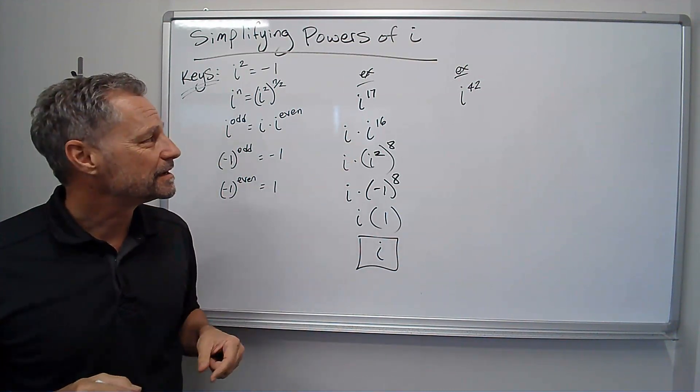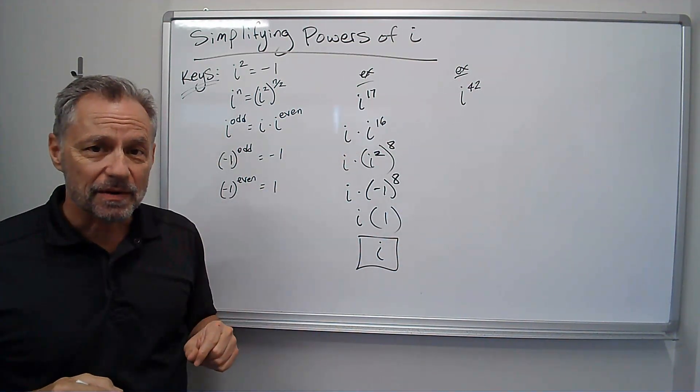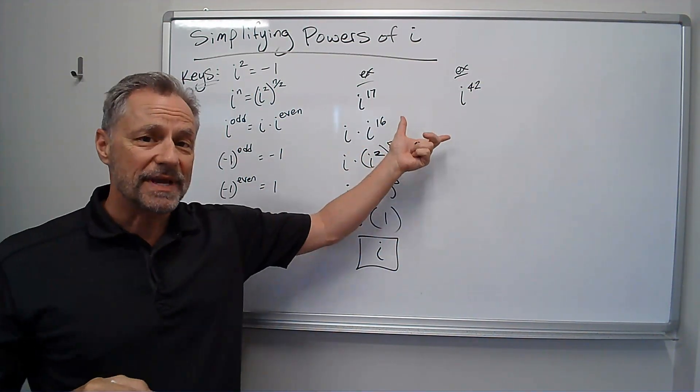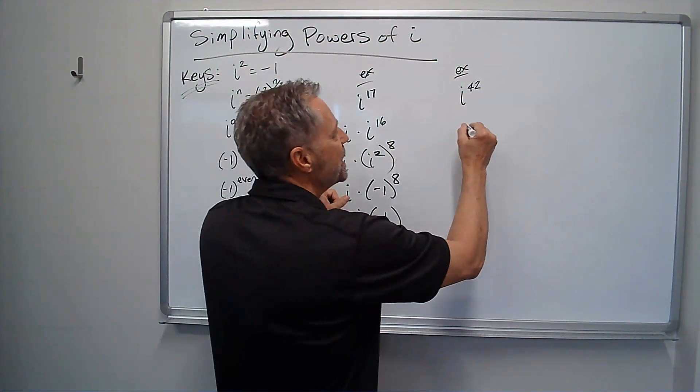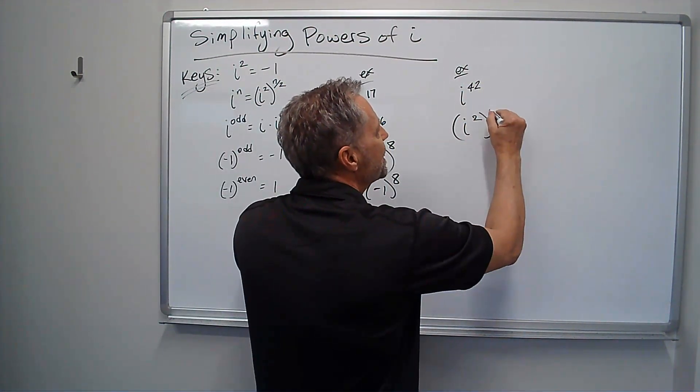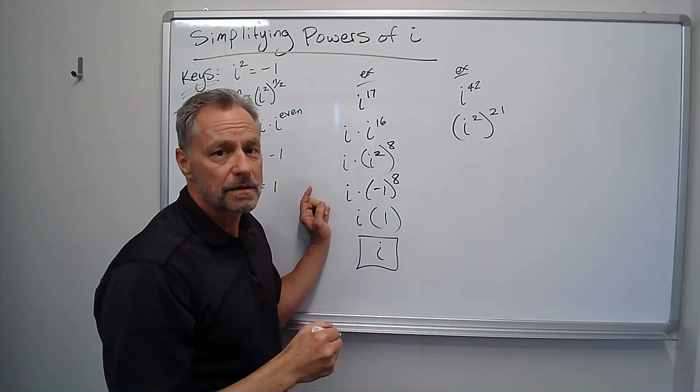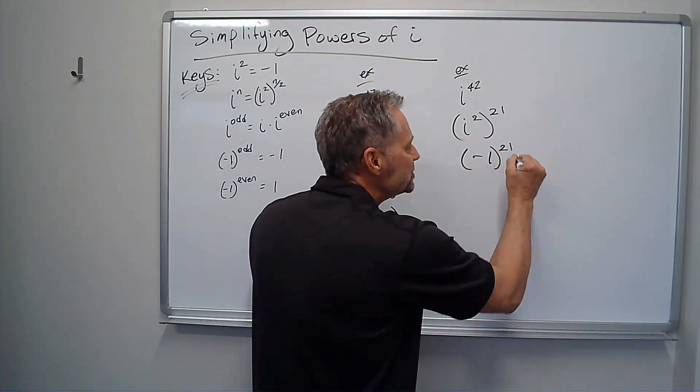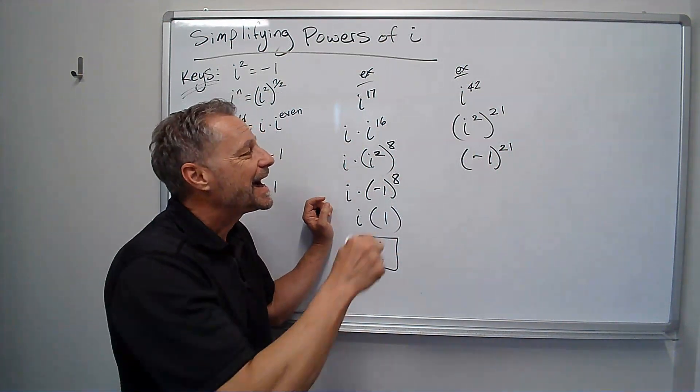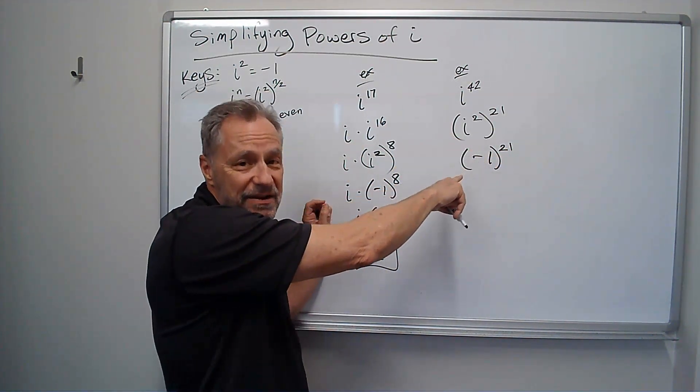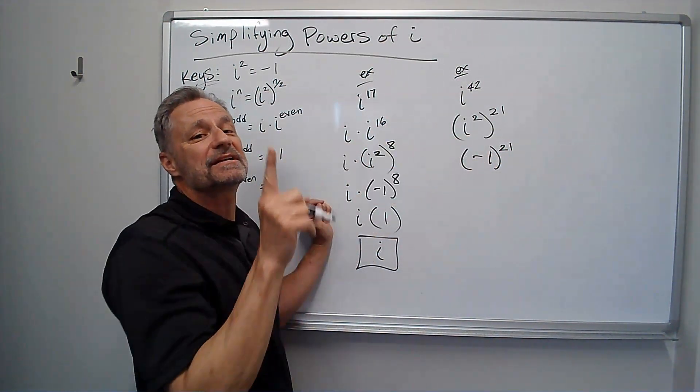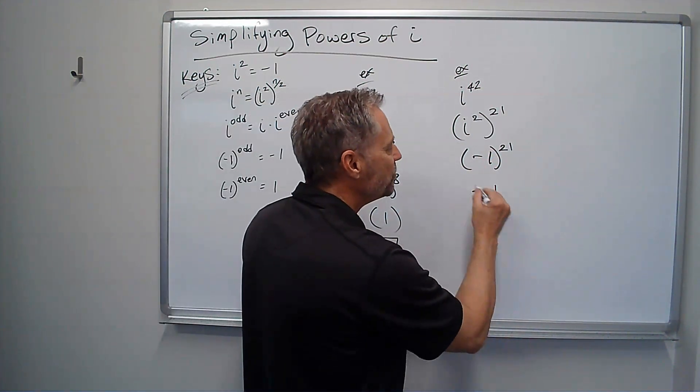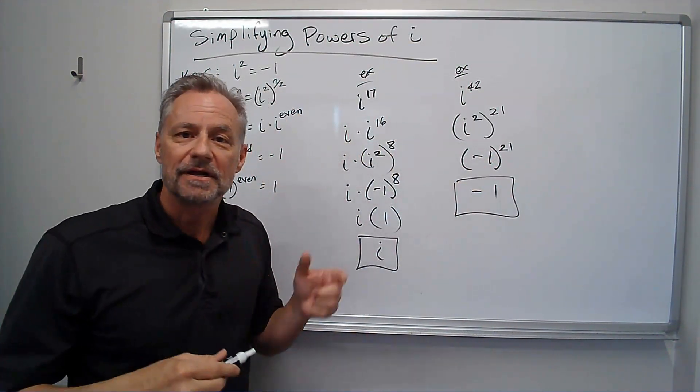Alright, let's try another one. i to the 42nd power. Well, it's already even. I can immediately go to this i squared. It's i squared to the 21st power. i squared is negative 1. That's raised to the 21st power. I have an odd number of negative 1s multiplied together, so they all cancel out except one of them. I get negative 1 as my answer, and I'm done.